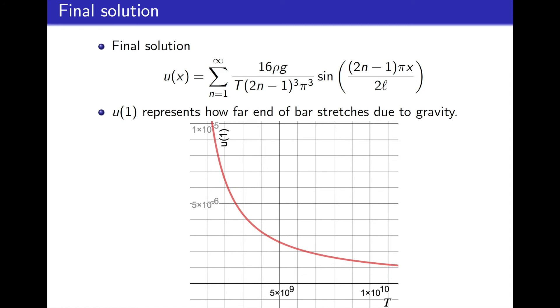And here what we have is a plot of the value of u(1) plotted against the tension t. So the x-axis in this plot here is the value of the tension for the particular metal. So as the tension changes, we are really considering different material types.